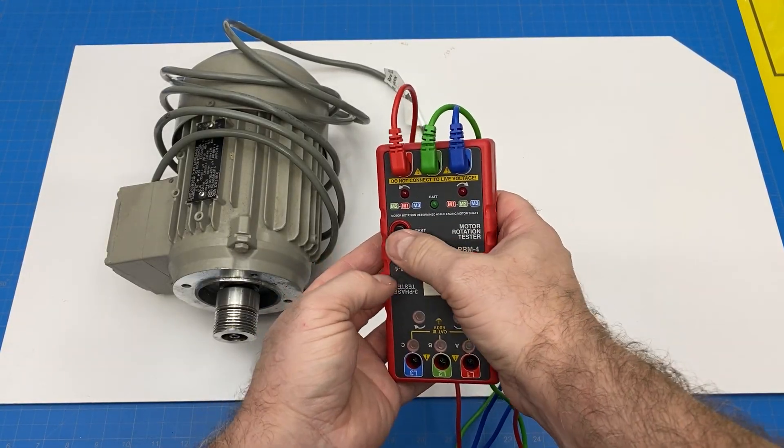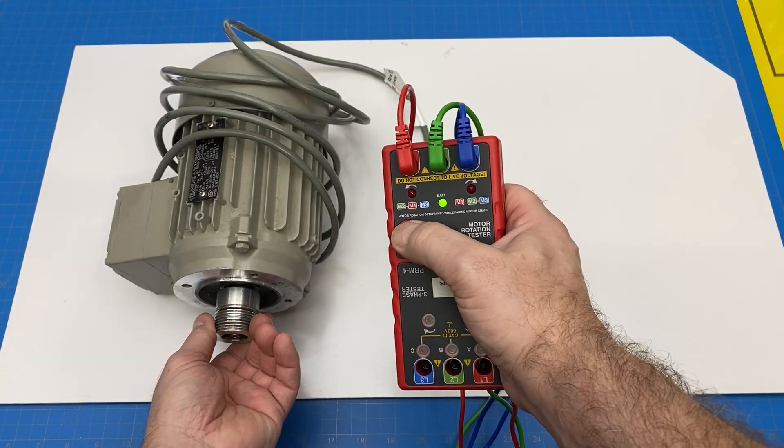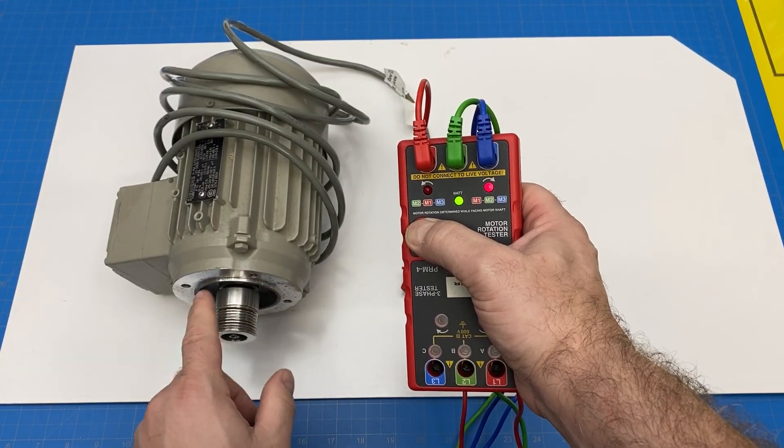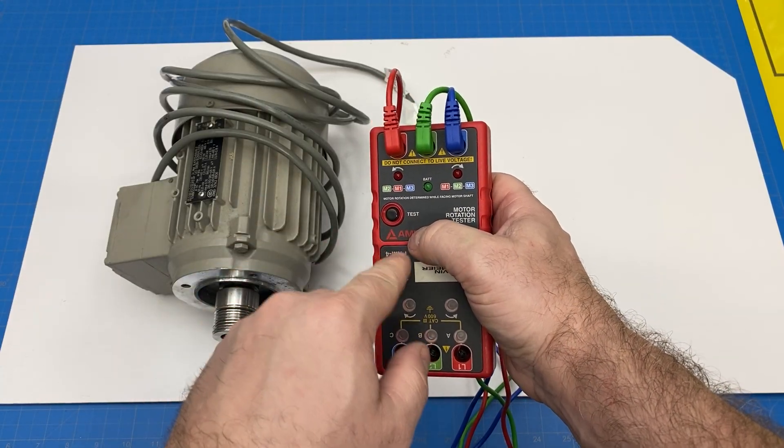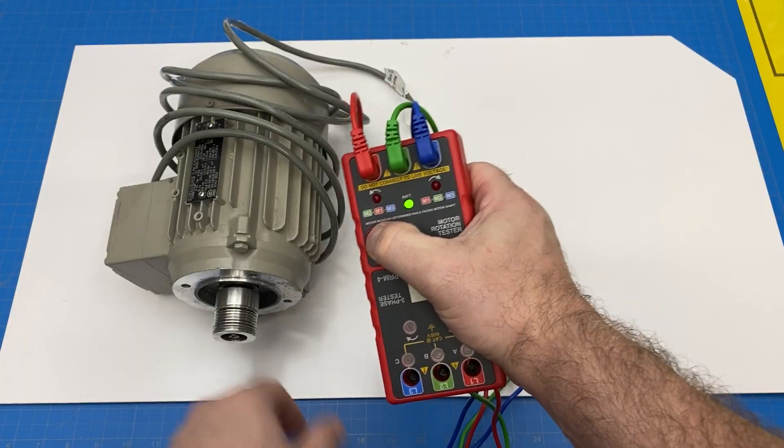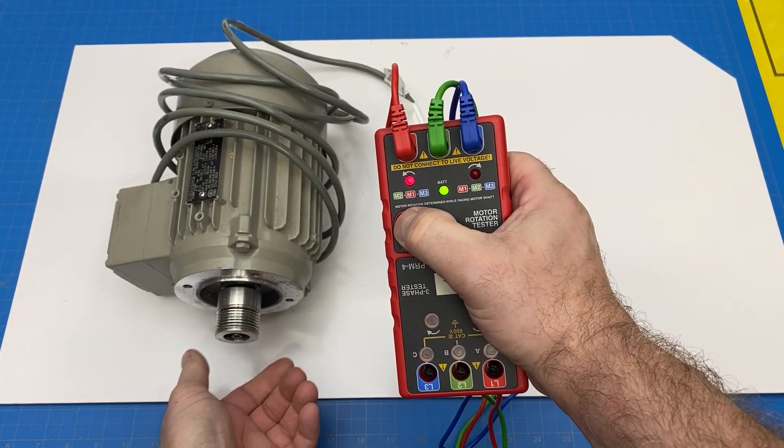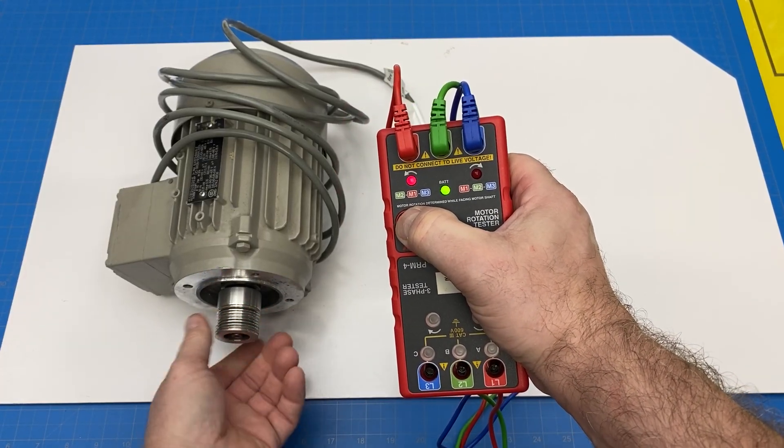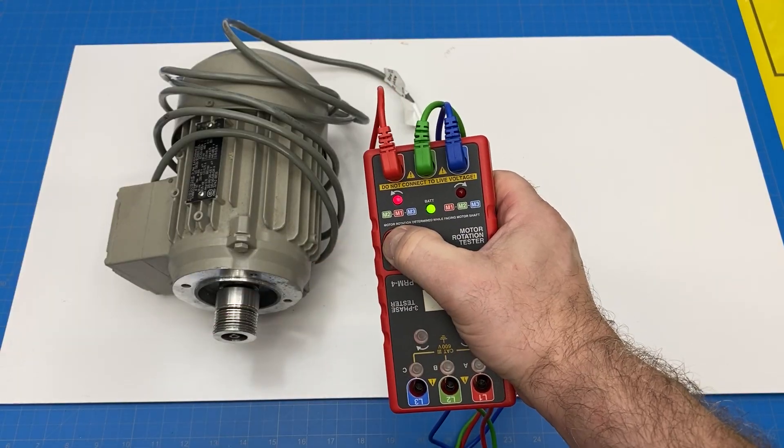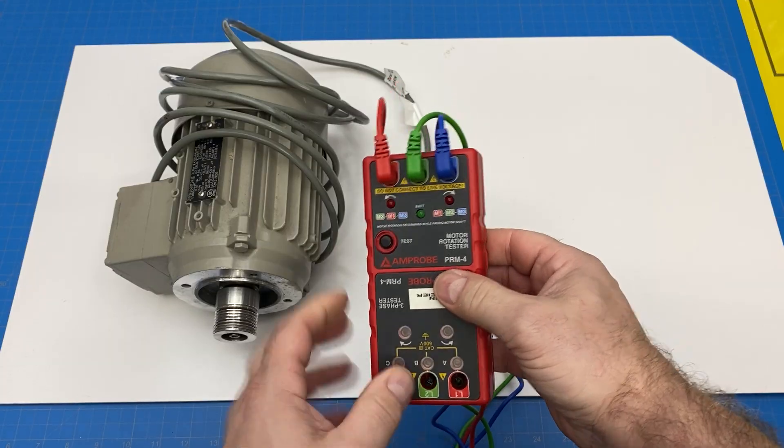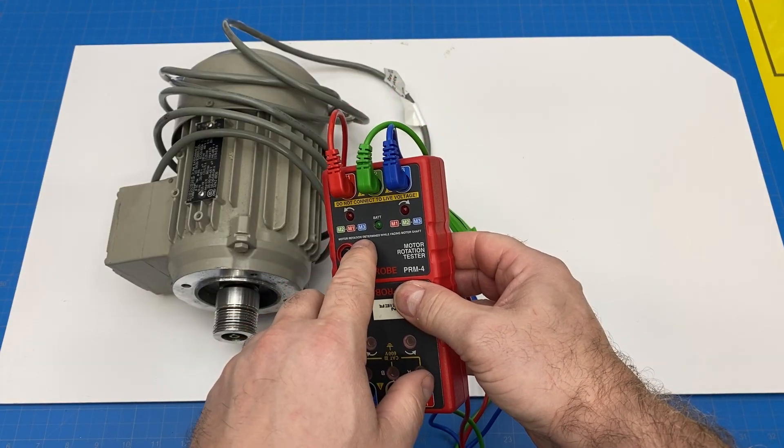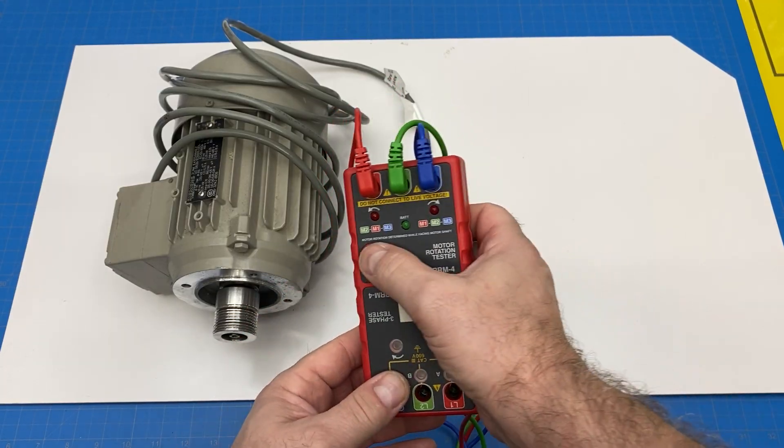Then we press the test button and turn the shaft of the motor. As we can see here, when I turn the shaft clockwise I get a clockwise rotation, so this one's correct. To test the other direction, let go, press it again, and then turn. If I don't let go and then change rotation, it won't actually change here, but that's okay. The note says the rotation is facing the shaft, so this would be correct.